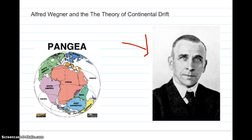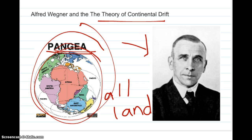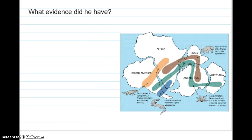Basically, the theory of continental drift says that the continents started as one big supercontinent. We call that continent Pangaea. The word Pangaea means 'all land,' referring to how all the continents were connected together.